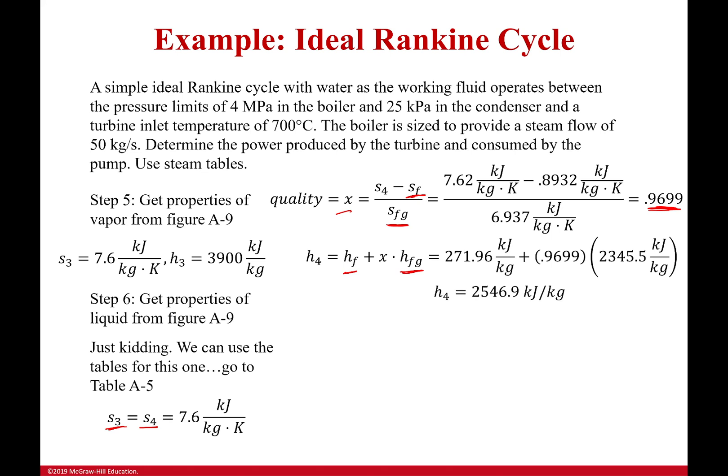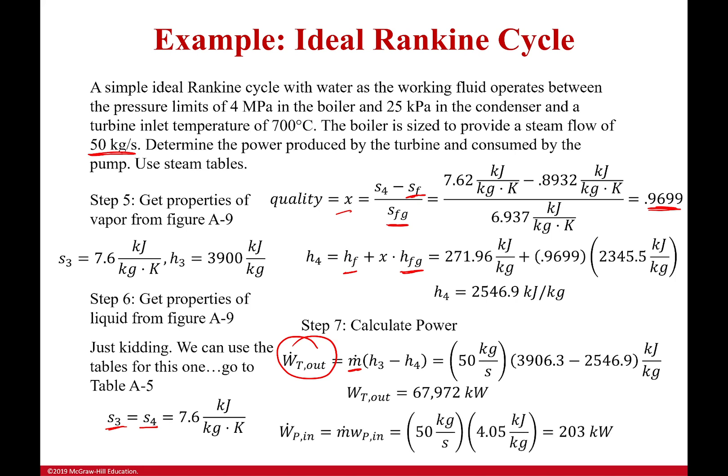So with that, I have my last enthalpy. So finally, I've got almost everything here. I had the work of the pump, I calculated that earlier. Now I can find out how much energy my turbine is extracting. So this is the amount of energy per kilogram of vapor that my turbine is extracting. It's the difference between those two values. And if we want to get the actual power output, I have to multiply that by my mass flow, which was given in the problem statement. So I get my turbine's work output is 67,972 kilowatts. And if I go back to do the pump, it's 203 kilowatts, which you can see is really insignificant compared to the amount of power that we are generating.